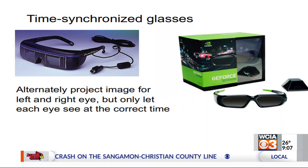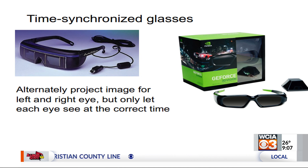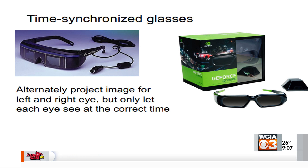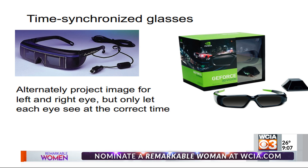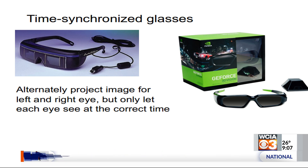Another way you could do it is to put a shutter in front of each eye — one eye only looks at the screen for one instant, then you change the image on the screen, change which eye can look, and keep toggling back and forth. That's how something like a game system would work, where you have these time-synchronized glasses that flutter back and forth. But that's kind of expensive — you need electronics to synchronize everything.